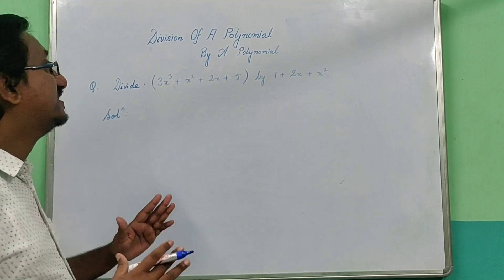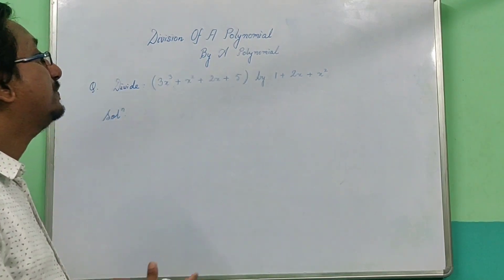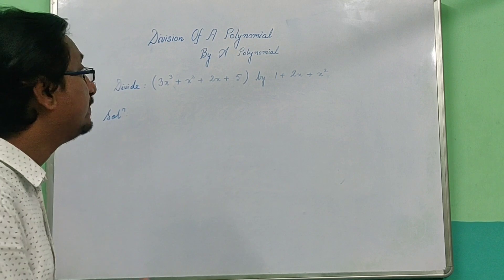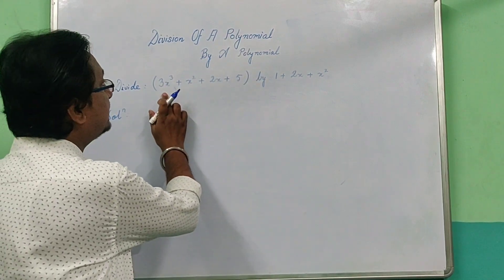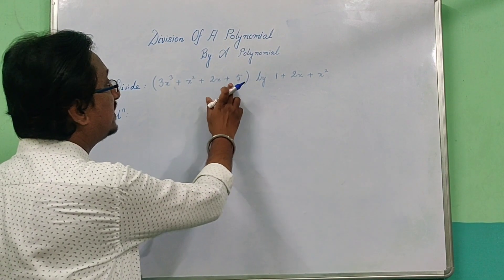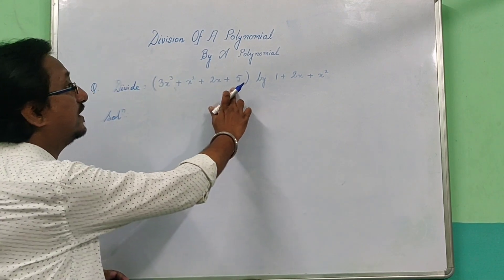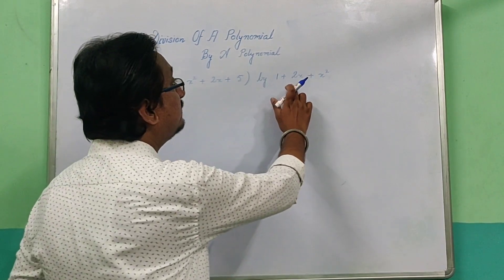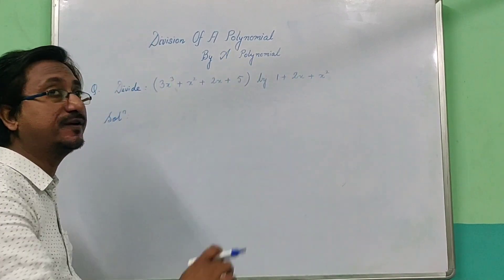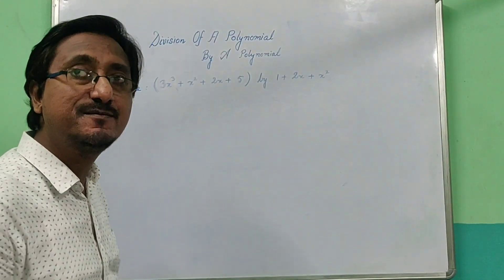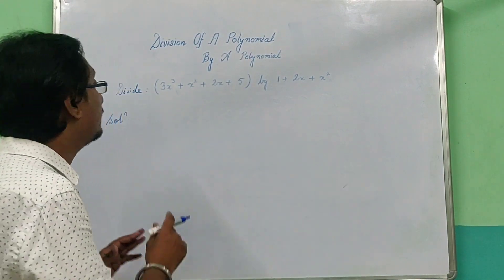Now we have one polynomial divided by another polynomial. Here we have 2x³ plus x² plus 2x plus 5, and we need to arrange it in descending order of power. Then we have x² — we need to write it in descending order. It is important that our powers are in descending order, which we need to arrange.